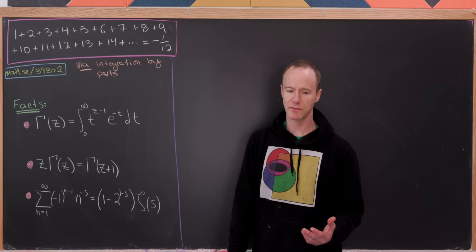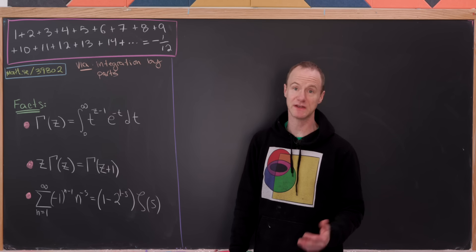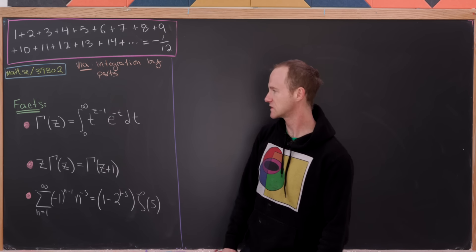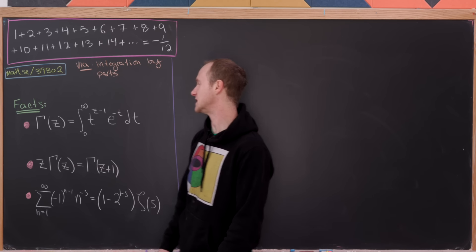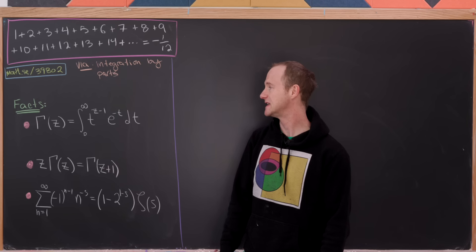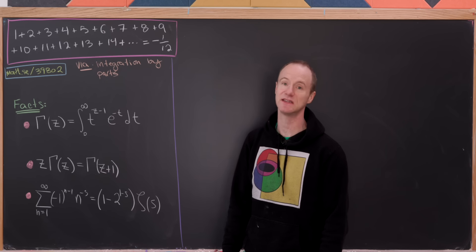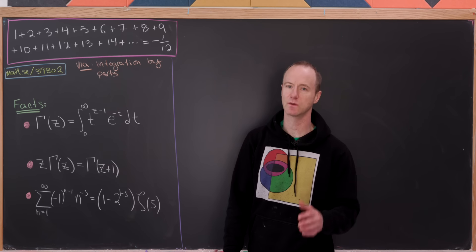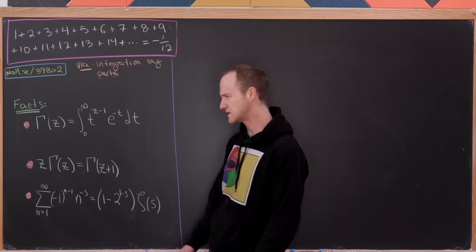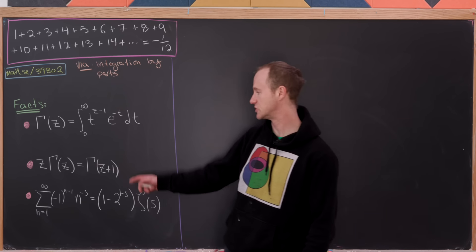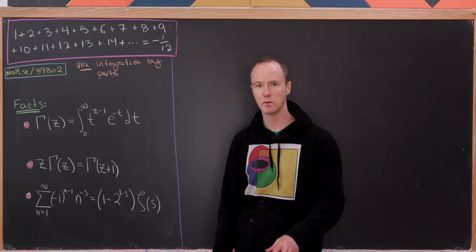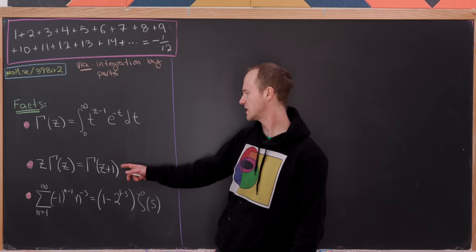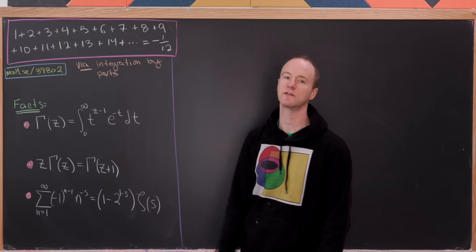Let's recall a couple of facts, one of which we'll prove, and then jump into the meat of establishing this famous formula. First, let's recall the gamma function. Gamma of z is defined to be the integral from zero to infinity of t to the z minus one, e to the minus t, dt. This is a generalization of the factorial — gamma of n plus one equals n factorial if n is a natural number. And z times gamma of z equals gamma of z plus one, which makes it look even more like a factorial. You can establish this rule using integration by parts on the formula above.